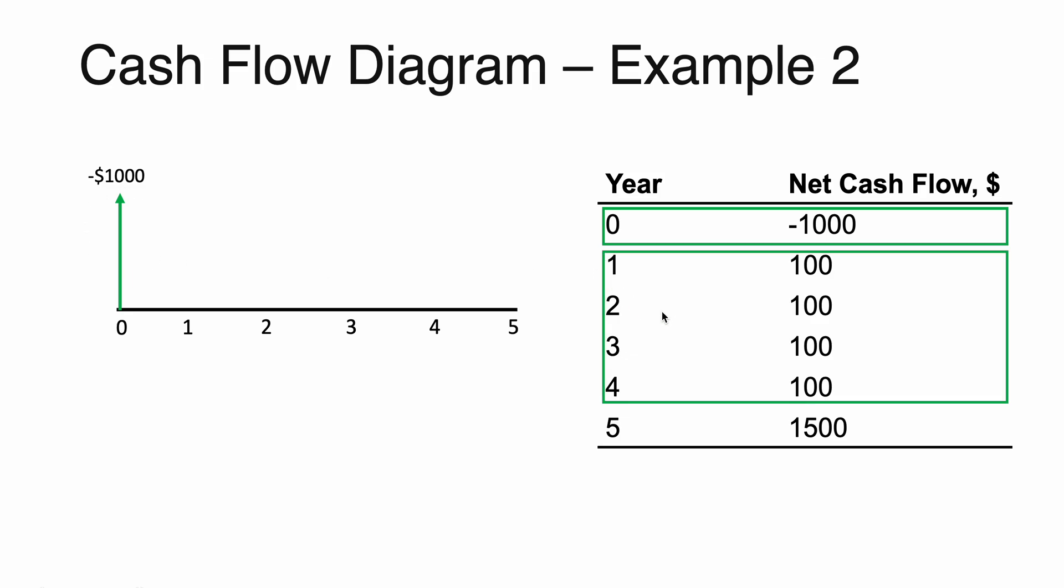And in years 1, 2, 3, 4, we have a positive net cash flow of $100, respectively, for each of the years. Now because they all share the same net cash flow, we can simplify this by drawing all the arrows as the same size, drawing a dotted line like this, and at the bottom, indicating the $100. This tells us that in each year, the money going in is $100, respectively.